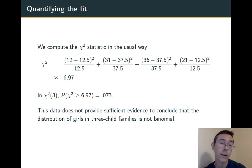We get 6.97, we're looking in the distribution chi-squared of 3, 3 degrees of freedom because there are 4 categories here, and the probability of getting a chi-squared value at least that extreme is 0.073.